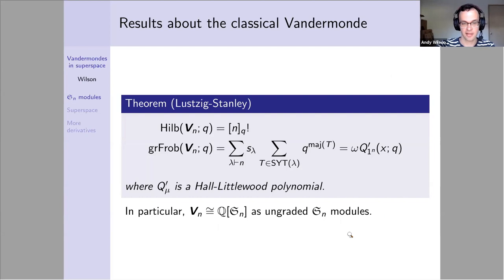Going back to the classical Vandermonde case, this is a rephrasing of what Josh stated earlier. The Hilbert series is the q-analog of n factorial, and the graded Frobenius series is given by the major index over standard Young tableaux, or a certain modified Macdonald polynomial. In particular, if I don't care about the grading, this Vandermonde module is isomorphic to the regular representation of the symmetric group.